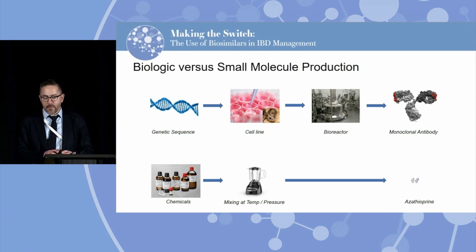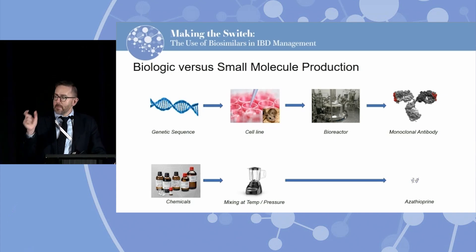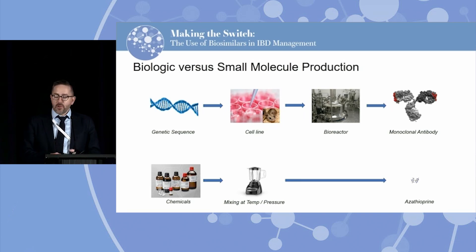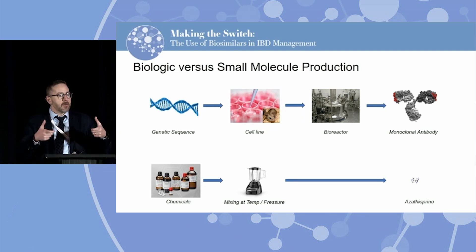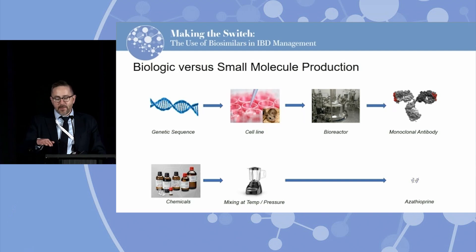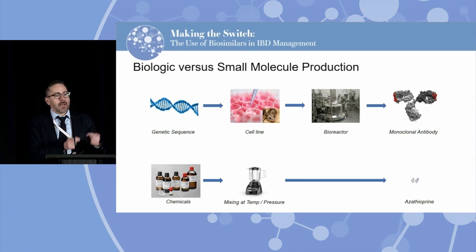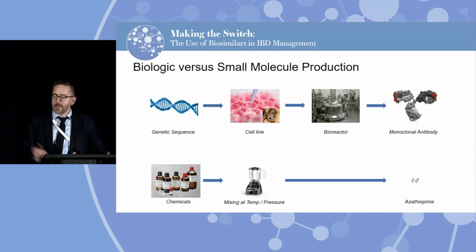If you want to make azathioprine, you get a bunch of chemicals, mix them at the right temperature and pressure, and you can produce the exact same azathioprine every time, every batch, every manufacturing process. In total contrast, if you want to make a biologic like infliximab, you basically have to put a genetic sequence into a cell line, and then you're asking nature to create that monoclonal antibody in bioreactors. You can control the genetic sequence and the cell line, but once nature starts to make those antibodies, there are slight variations that nature introduces. As a consequence, what comes out the far end is never going to be an exact identical copy of the original antibody you're trying to produce.